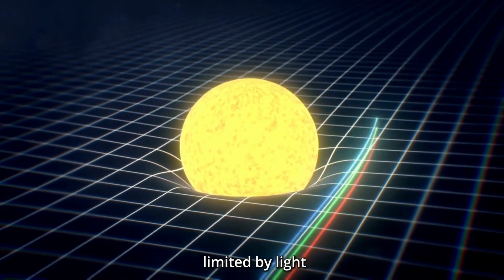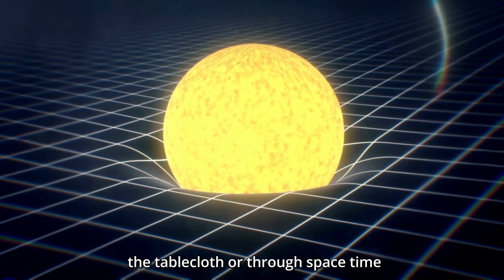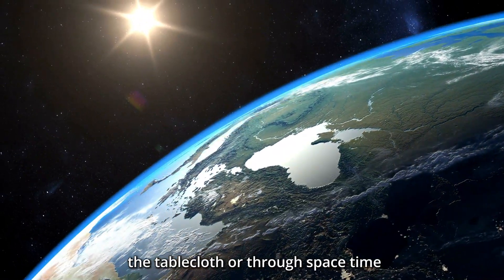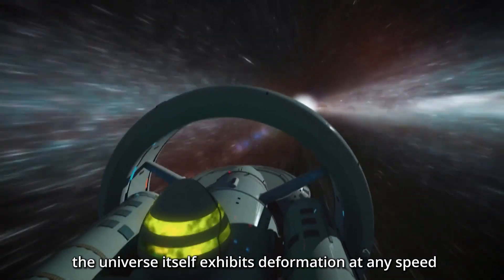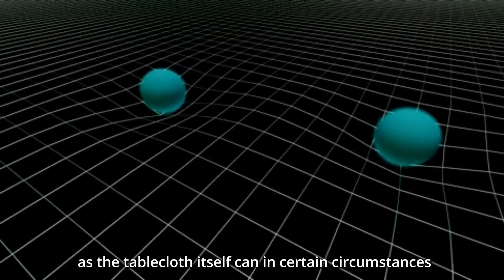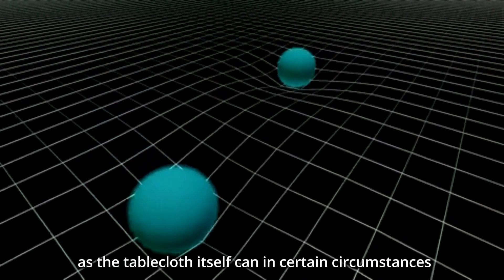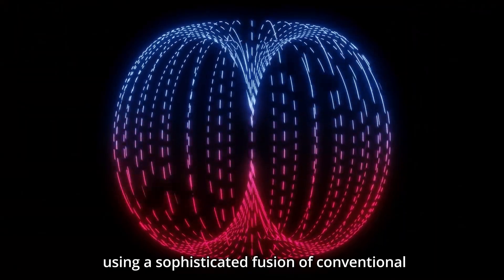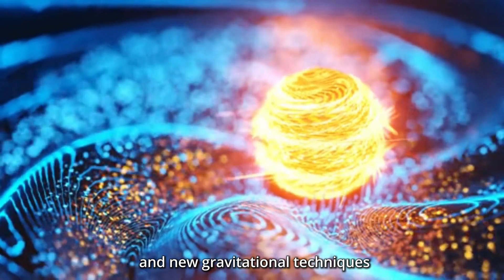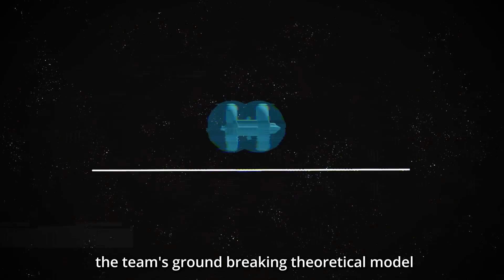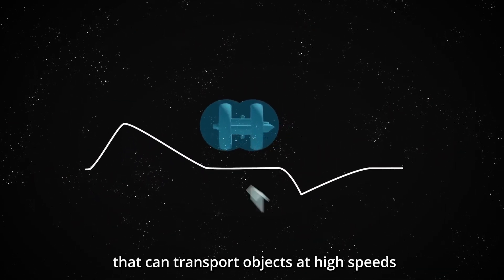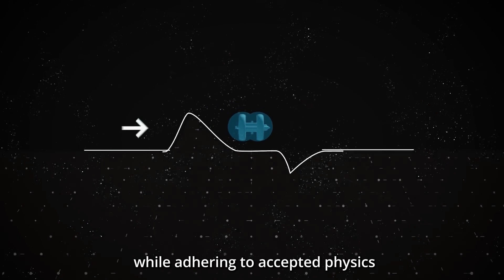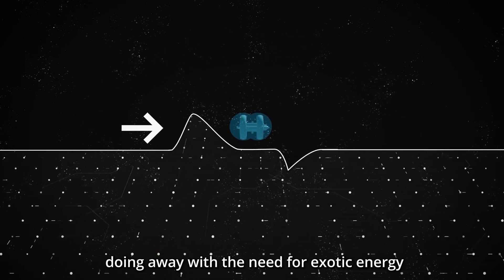Only the speed limited by light can be reached by anything travelling across the tablecloth, or through space-time. Conversely, the universe itself exhibits deformation at any speed, as the tablecloth itself can in certain circumstances. Using a sophisticated fusion of conventional and new gravitational techniques, the team's groundbreaking theoretical model creates a warp bubble that can transport objects at high speeds while adhering to accepted physics, doing away with the need for exotic energy.